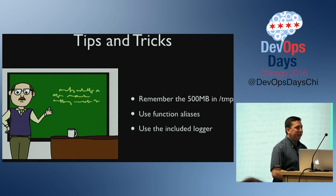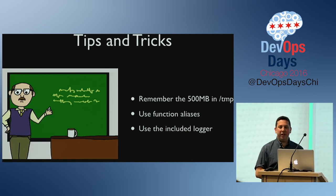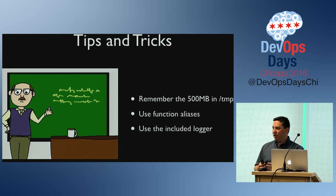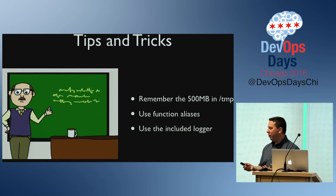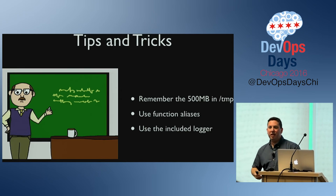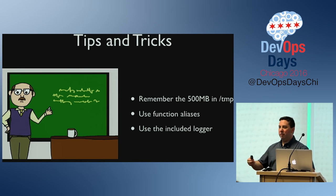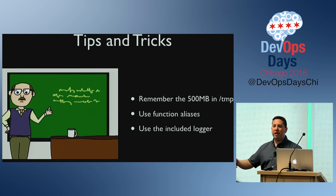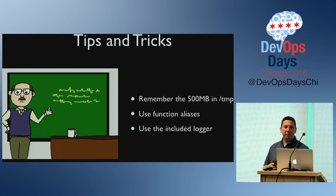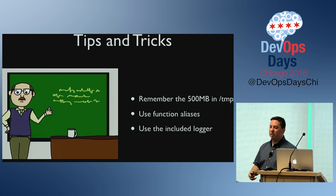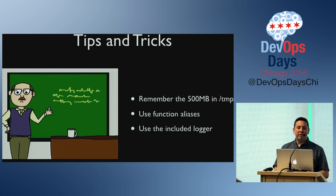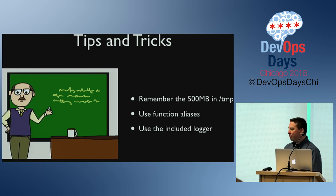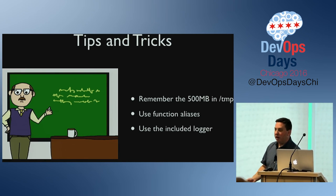Function aliases are great ways to handle routing. You can use function aliases with prod and dev, for example — you don't even need two separate environments. You can use version one, version two, version three, with your code pointed at a particular version of a function. Make sure you use them. Make sure you're using the included logger — it has a lot of good information, but you do have to process it.